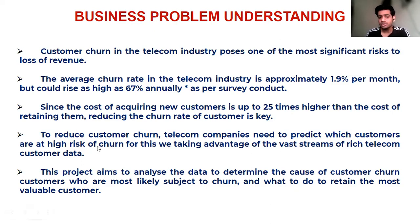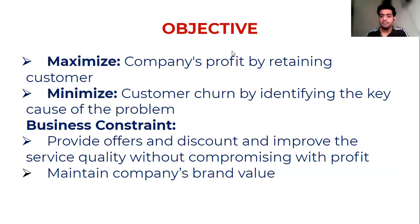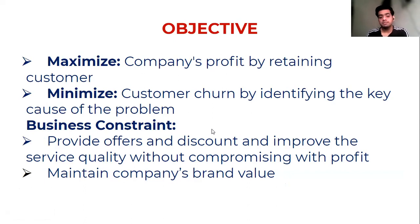To reduce customer churn, telecom companies perform data analysis to predict which customers are at high risk of churning and take measures to retain them. In this project we aim to analyze the data to determine the cause of customer churn, identify who is most likely to churn, and determine how to retain the most valuable customers. Our objective is to maximize company profit by retaining customers and minimizing churn by providing offers, discounts, and improved service quality without compromising profit or brand value.